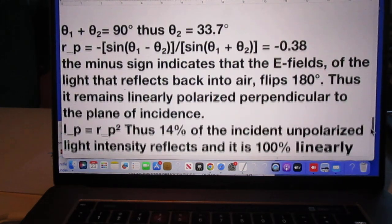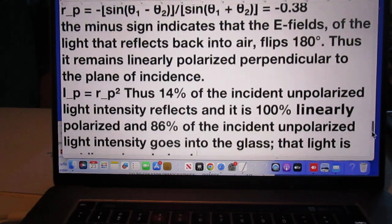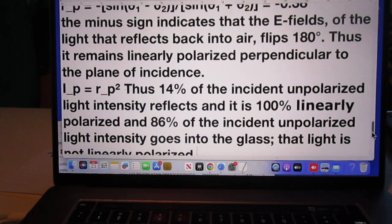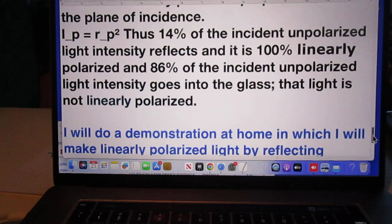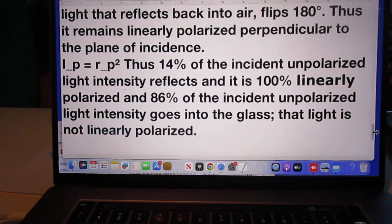Let's now go back to our situation. Theta 1 plus theta 2 is 90 degrees. Therefore theta 2 is 33.7 degrees. The minus sign indicates that the E fields of the light that reflects back into the air flips 180 degrees. Thus it remains linearly polarized perpendicular to the plane of incidence. That's obvious if you flip it 180 degrees. The intensity of that reflected light perpendicular to the plane of incidence is 14% because it is the square of this number. So 14% of the incident unpolarized light intensity reflects and it is 100% linearly polarized. And 86% of the incident unpolarized light intensity goes into the glass. That light is not linearly polarized.